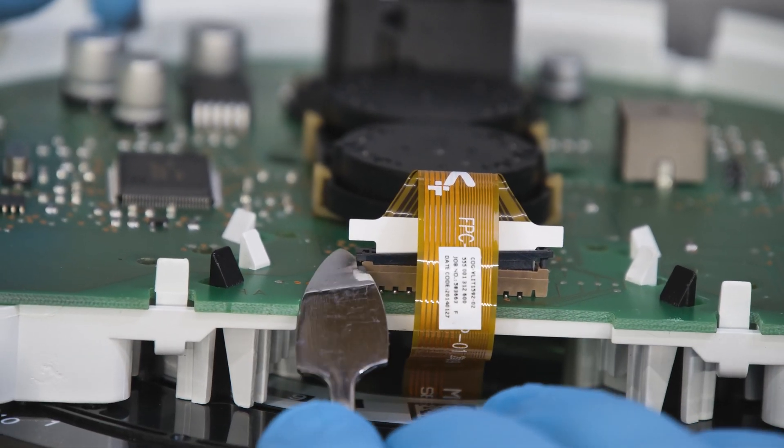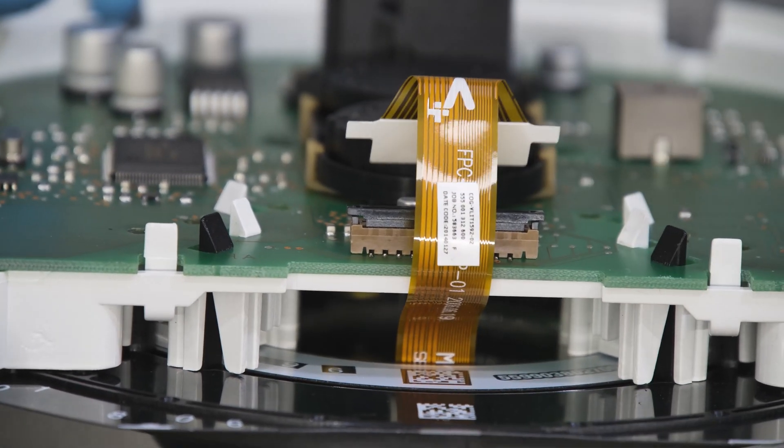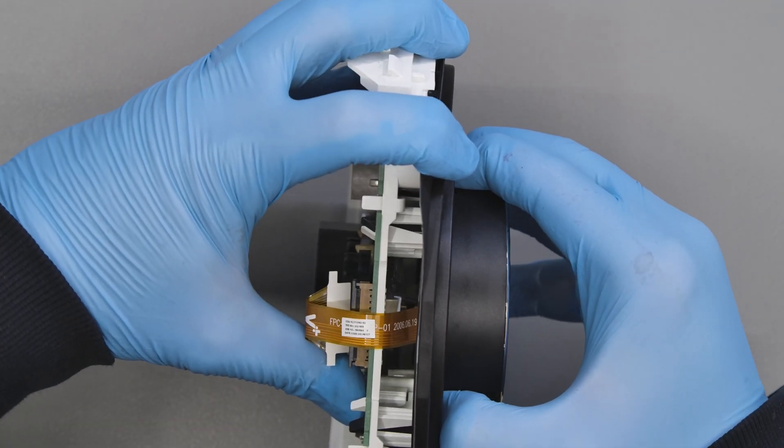Open the FPC connector and undo it. Gently pressing on the white plastic clips, remove the LCD block.